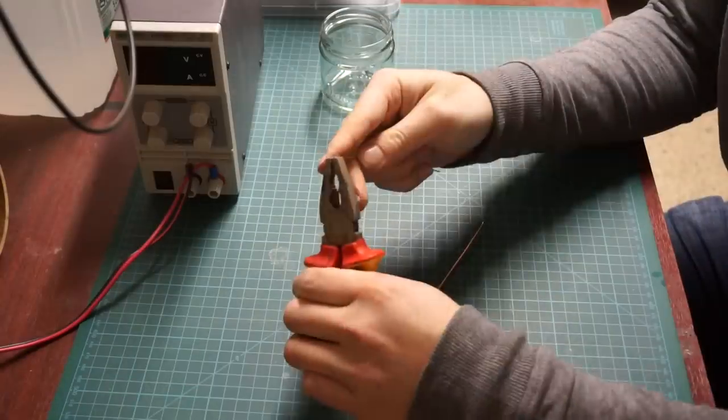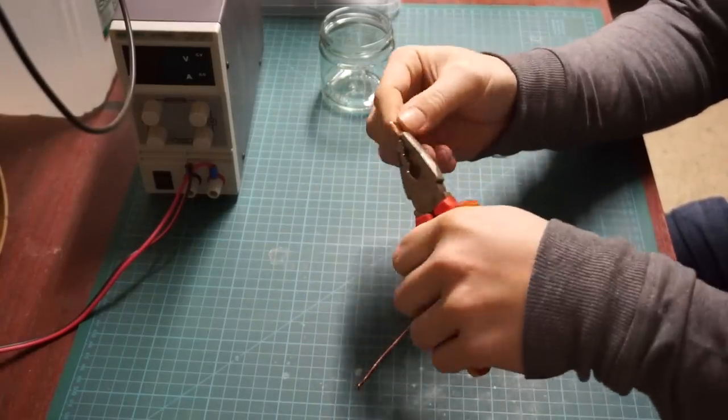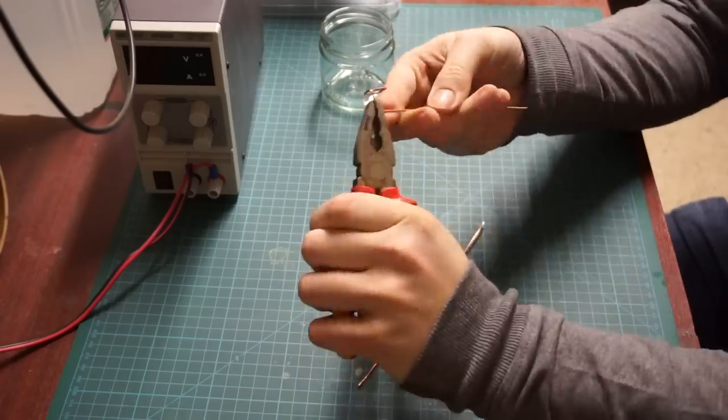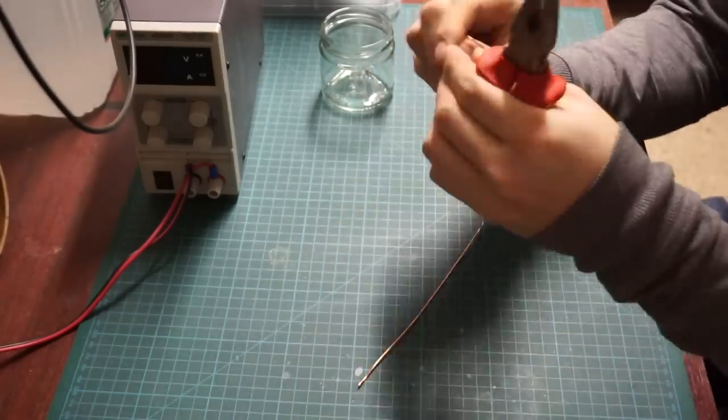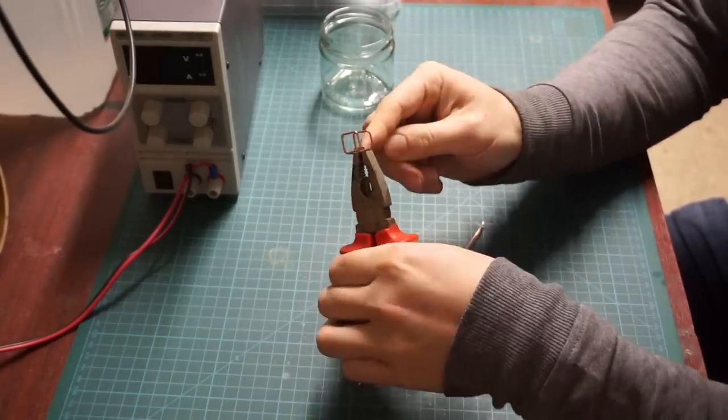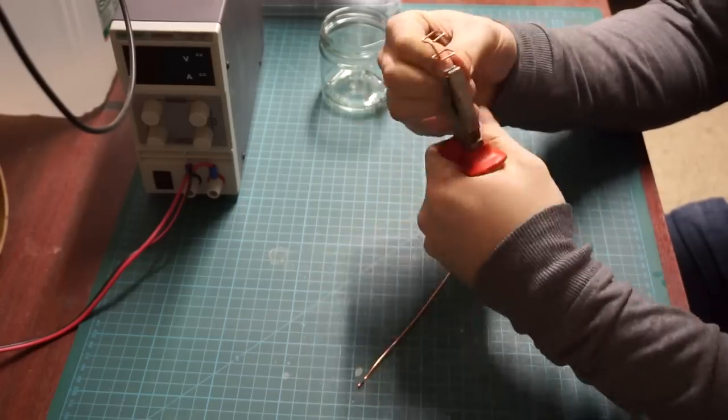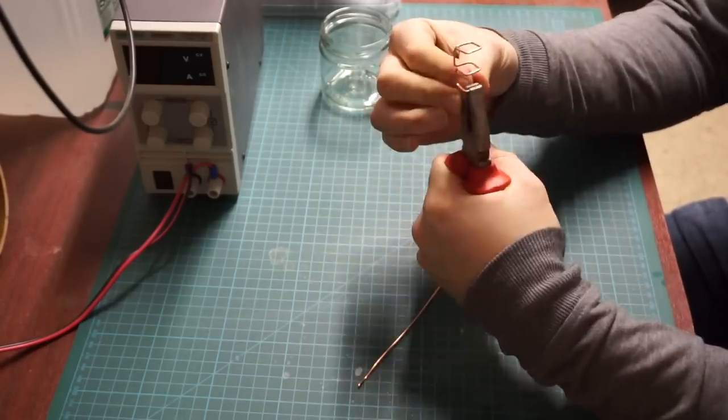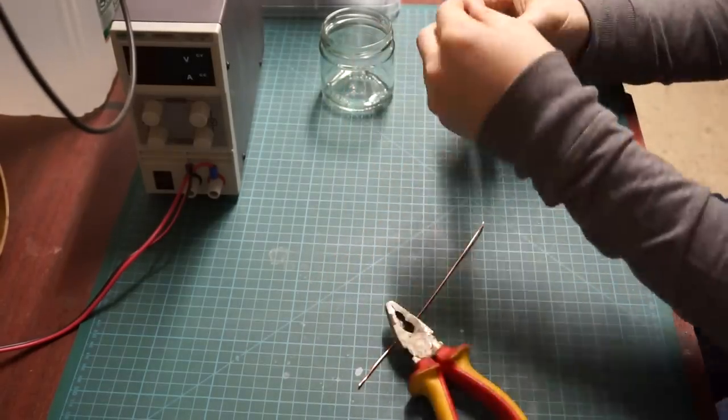For the electrodes you could basically use anything made from pure copper. In this experiment I'm going to use copper wire. In order to increase the submerged surface area I gave it some bends. All of the electrodes used in this test are formed in the same way.